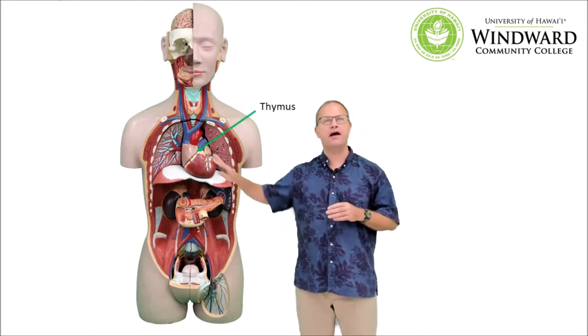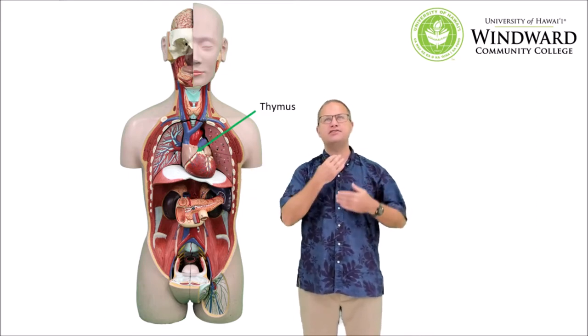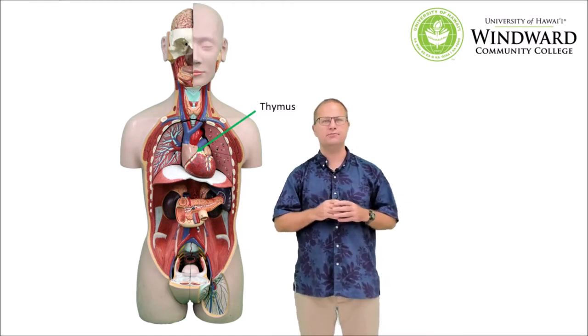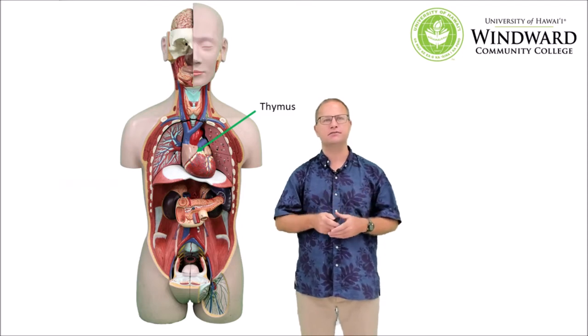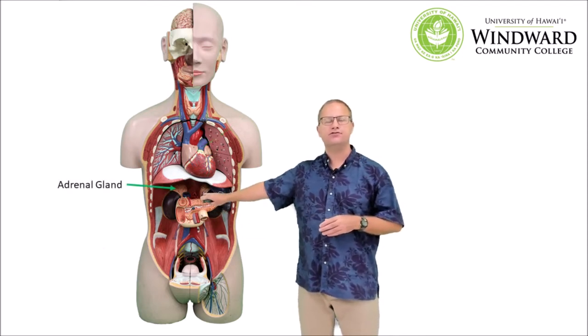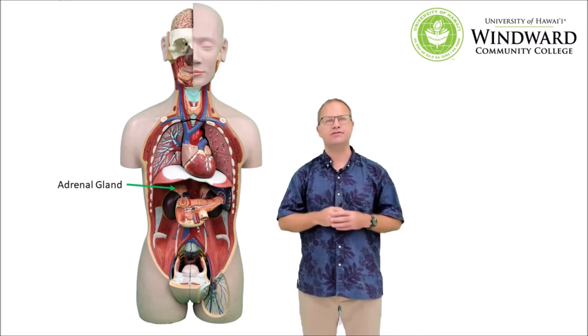Next we have the thyroid gland. The thyroid gland is located on the Adam's apple or larynx, and it's important for secreting the hormone thyroxin, which helps to regulate metabolic rate. The next gland is the thymus. The thymus covers the heart and it secretes the hormone thymosin, which helps to stimulate the maturation of white blood cells. Next we have the adrenal glands, which are found superior to the kidneys, and they secrete a variety of hormones including epinephrine and aldosterone.